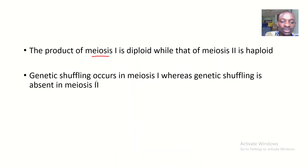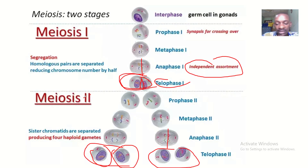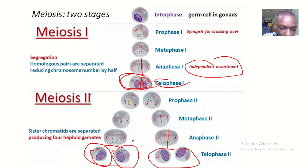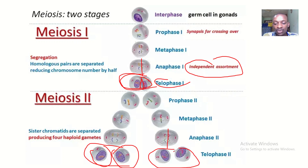Genetic shuffling occurs in myosis 1, whereas genetic shuffling is absent in myosis 2. In myosis 1, the two chromosomes are still joined by a synapsis, so there could be a shuffling of genes between them. While in myosis 2, there is complete separation, so there is definitely an absence of genetic shuffling.